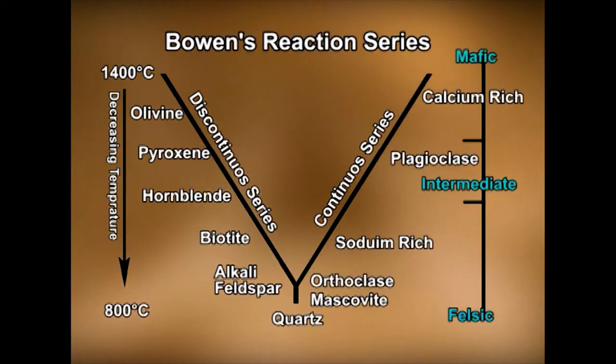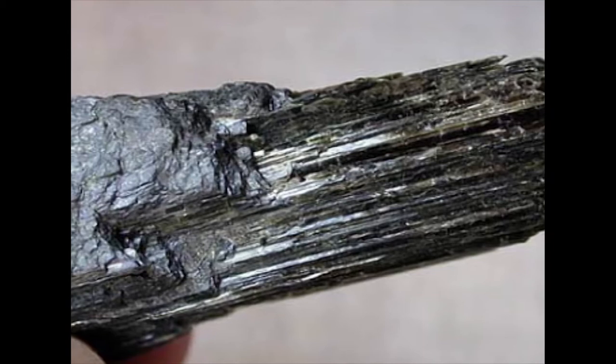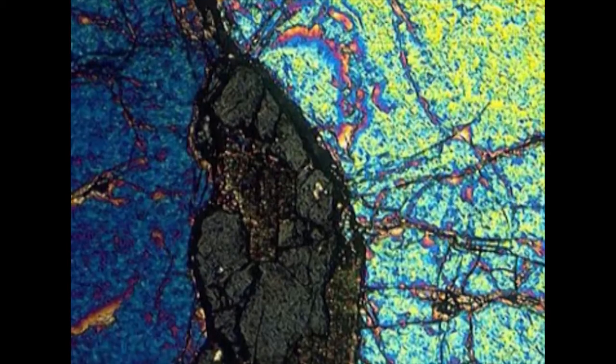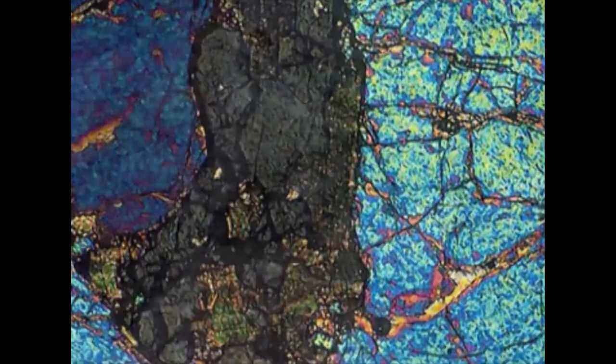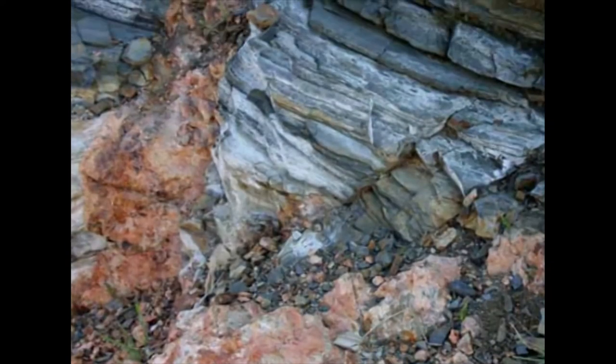Biotite, also called iron or black mica; muscovite, called white or potash mica; lepidolite, lithium mica; and phlogopite, magnesium mica, are the important members of the mica group with sheet structure. Like amphiboles, these also contain the hydroxyl group. These are most easily identifiable minerals due to their near transparency, foliated habit, and shining lustre. Schists and gneisses, pegmatites, and other acid igneous rocks are the storehouses for muscovite and biotite. Phlogopite is restricted to magnesium-rich rocks like kimberlite, and lepidolite is found in pegmatites.